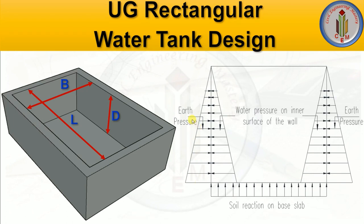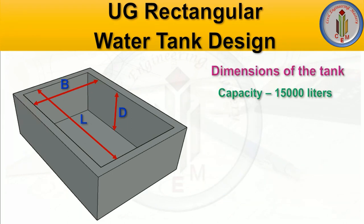Next, let's look at the pressure diagram for earth pressure. We will have earth pressure on the outer face of the wall, and water pressure on the inner face of the wall. So we have water pressure on the inner surface, earth pressure on the outer surface, and soil reaction on the base slab. Now we know the design elements and the pressure diagrams to consider while designing the water tank.